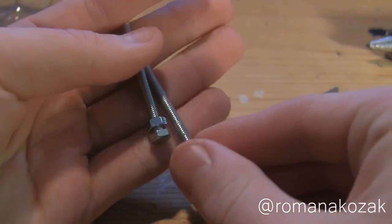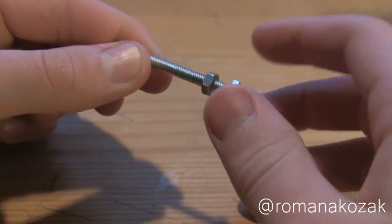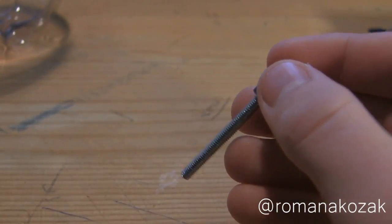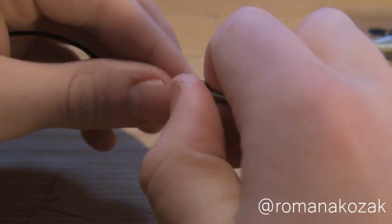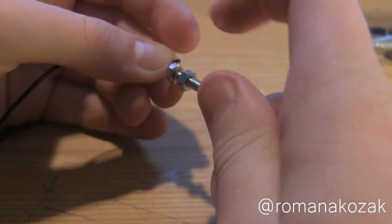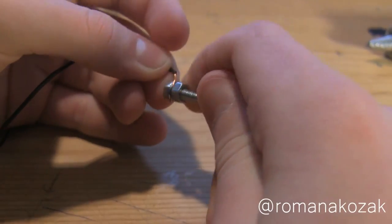Next take two screws with nuts on them and a black and red wire. Strip the end and then wrap one end of the black wire around one of the screws. Make sure to tighten the nut on it to make sure it's secure.